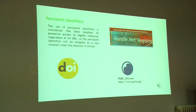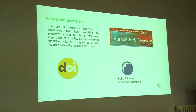A digital object, as it is available on the web, should remain accessible on a long-term basis regardless of its Uniform Resource Locator (URL). The URL has the purpose of identifying a resource and describing its location, but may become inconsistent if the resource is moved to another location. The use of persistent identifiers is considered the best solution to preserve access to digital resources regardless of their URL, as the persistent identifier will be assigned to a new location when the resource is moved.